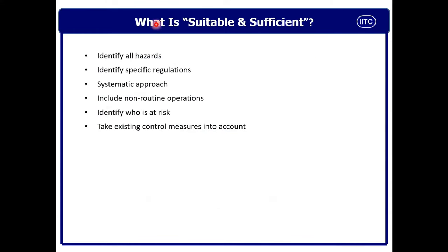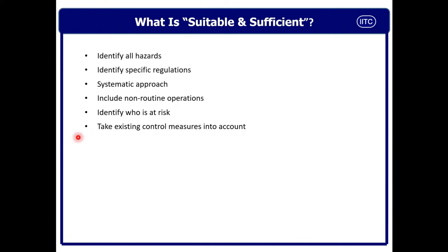What is suitable and sufficient? In a nutshell: identify all the hazards, identify specific regulations, put a systematic approach, include non-routine operations, identify who is at risk, and take existing control measures into account. If you do all these things, then we can justify that the controls are suitable and sufficient.